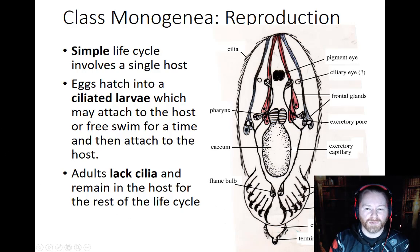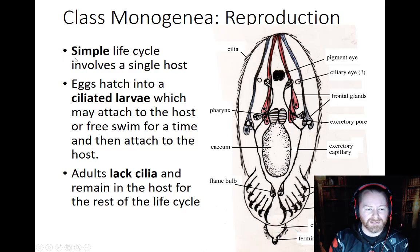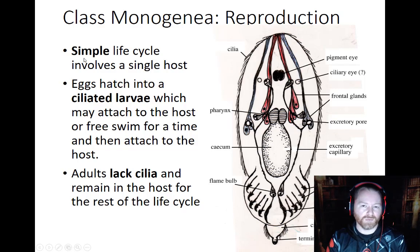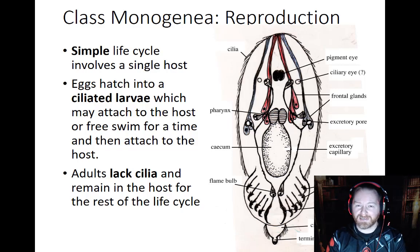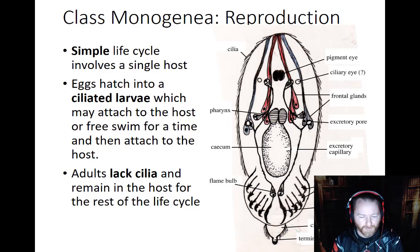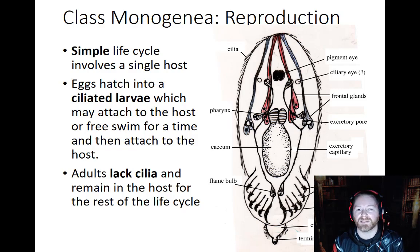When it comes to reproduction, it can be a little complicated. Basically, they spend their entire life on one single host. When the eggs hatch, the larvae are ciliated — covered with little hairs — which the young organism uses to swim through the water until it can find its own host. Once it attaches, it starts to grow and develop, loses the cilia, and then spends the rest of its life attached to that single host.